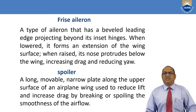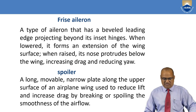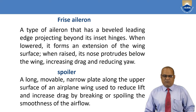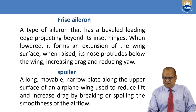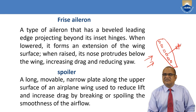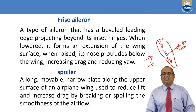Spoilers are used to spoil the lift of the aircraft — a long movable narrow plate along the upper surface of a wing used to reduce lift and increase drag by breaking or spoiling the smoothness of airflow. Small parts protrude from the upper wing surface; these are called spoilers. They are used to spoil lift, increase drag, and are deployed during landing.